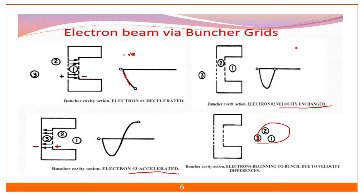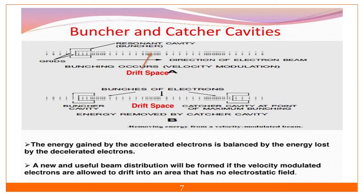We are bunching the three electrons — decelerating the fastest one, leaving the moderate one unchanged, and accelerating the slowest one. This forms bunches of electrons. There are two cavities in any linear beam structure: the buncher cavity, where we form the bunches of electrons, and the catcher cavity, where we extract energy from the bunched electrons.